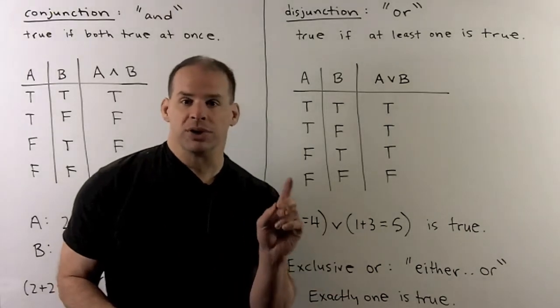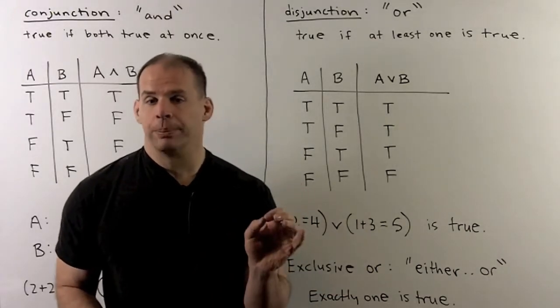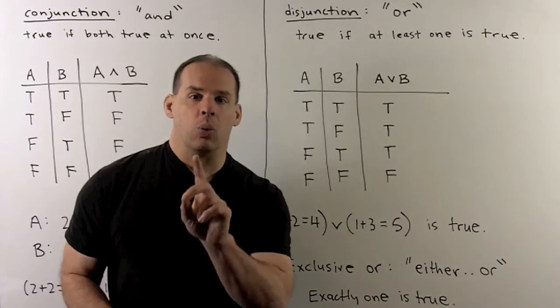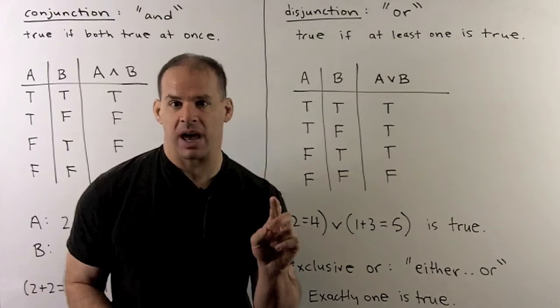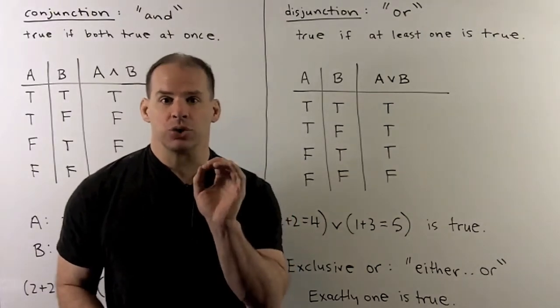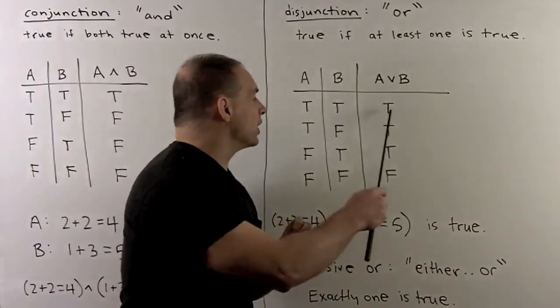Now, you'll also see once in a while what we call the exclusive or. This is going to occur when exactly one of our statements A or B is true, but not both at the same time. So, the way we would change the truth table is just to put a false in the first row.